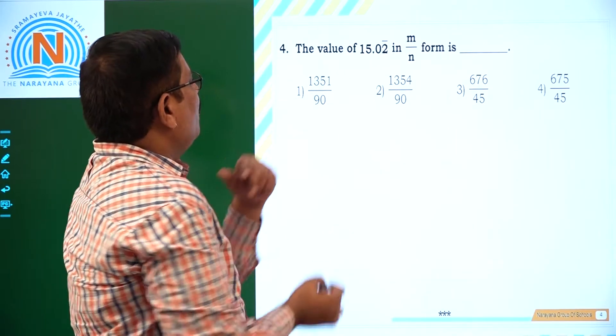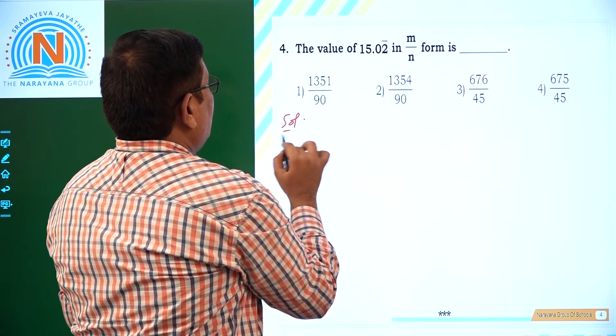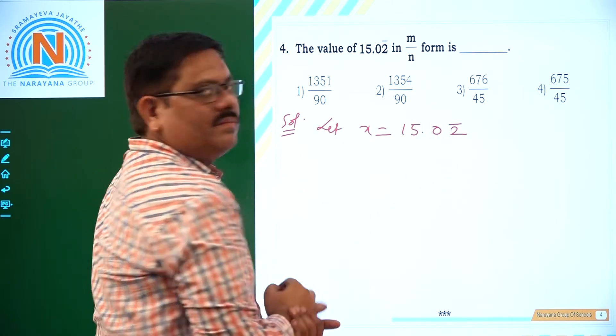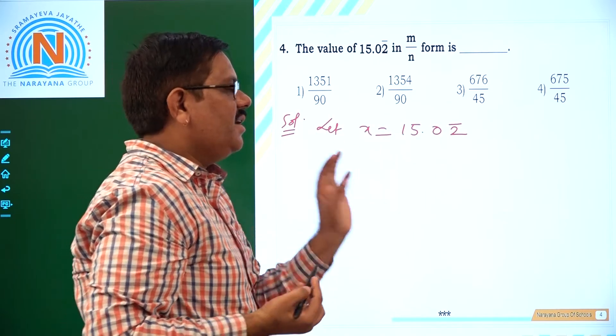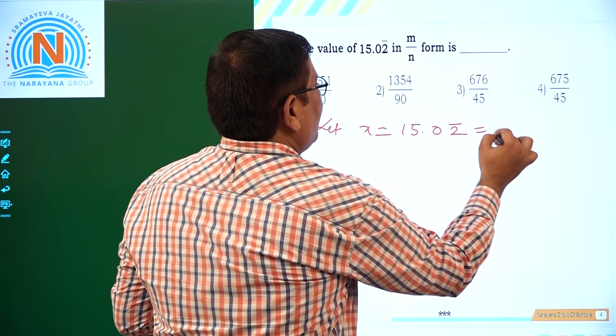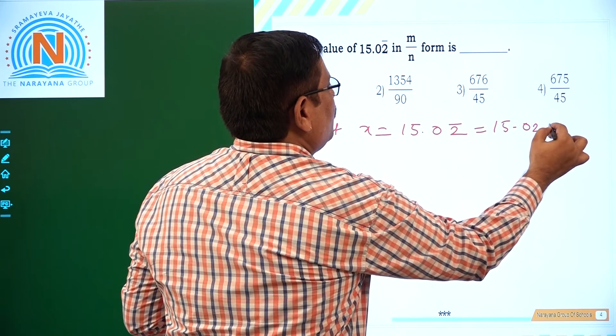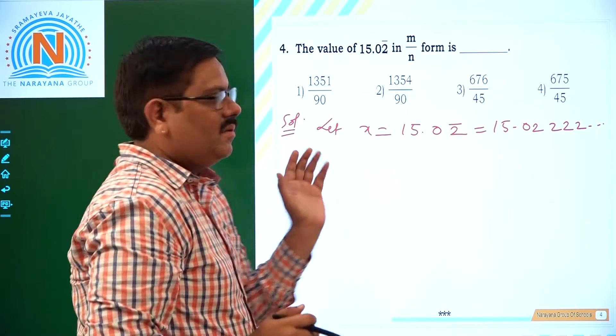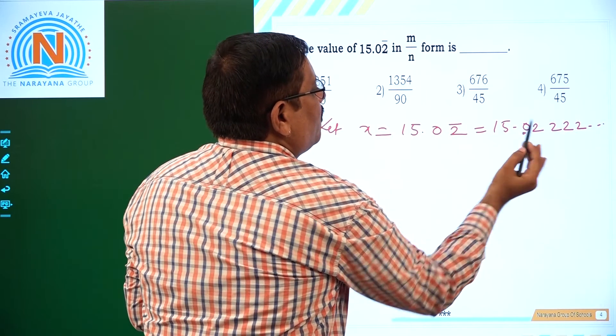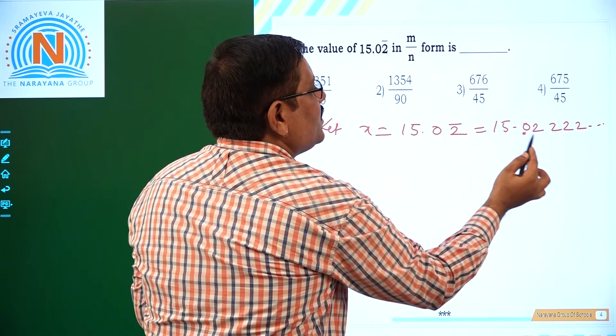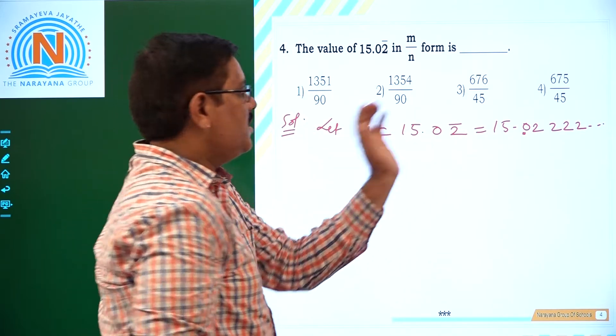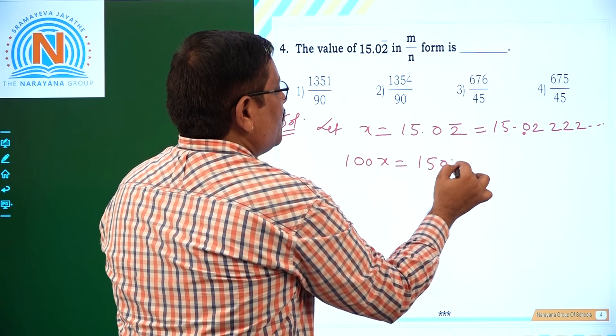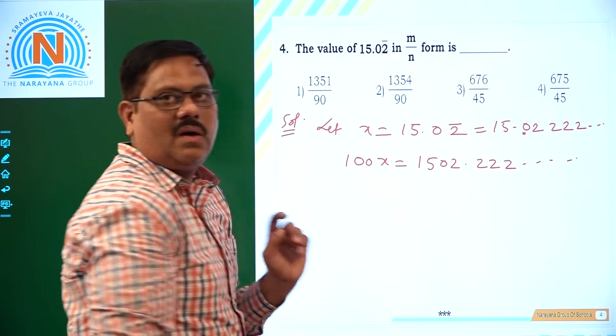So next, the value of same thing here. Let us take x as 15.02 bar. 2 bar means here the period is 2, periodicity is 1. So this is otherwise 15.02, 2, 2, 2 in succession like that. Now, how many digits we have to bring to the left? Here we have 1 digit, of course, that is not repeated. And 2 is repeating. 2 digits I have to bring to the left. 2 digits means what to do? I have to multiply with 100. 100x is equal to 1502.22 so on.